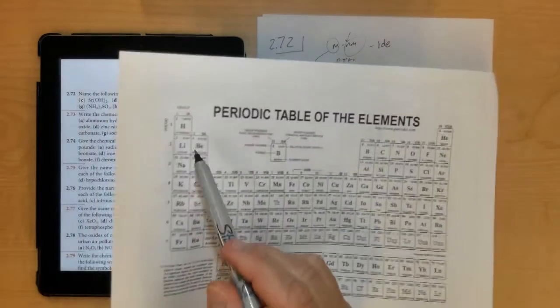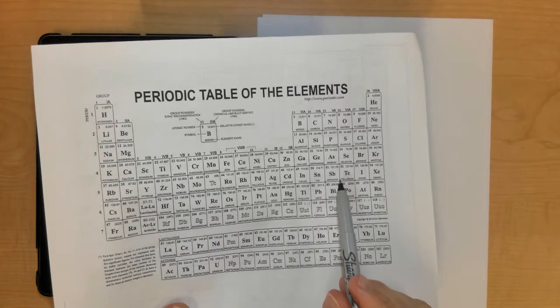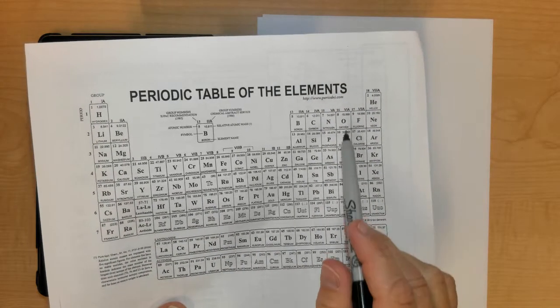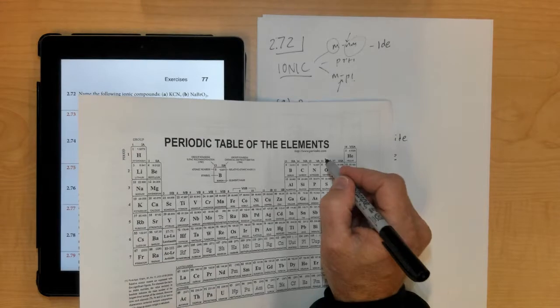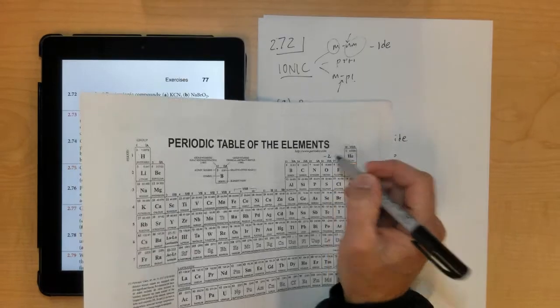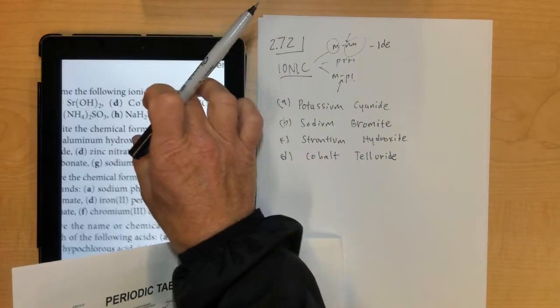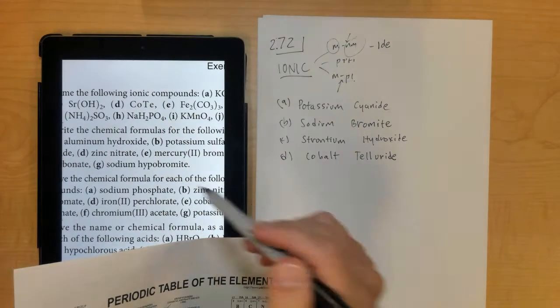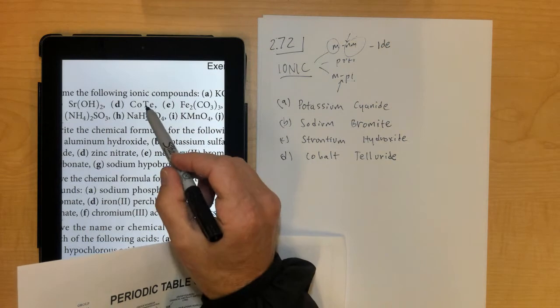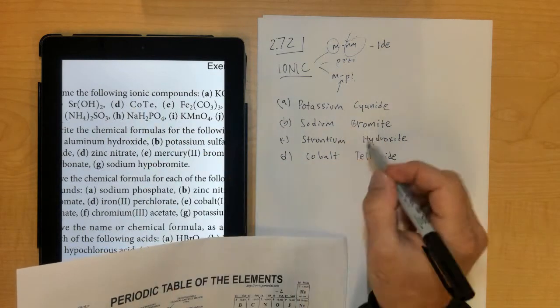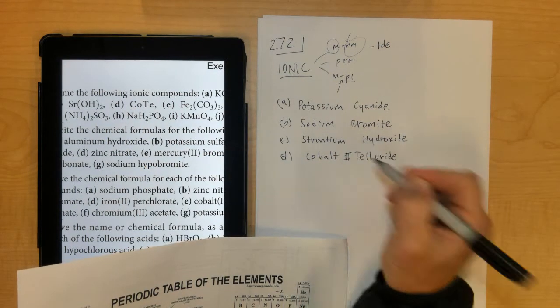Telluride is in the oxygen group, so you'd have to make the assumption that that's minus 2, which means that cobalt's got to be plus 2, because if you notice in the formula right here, there's only one cobalt and one tellurium atom, and if this is minus 2, then cobalt's got to be plus 2, so it would be cobalt 2 telluride.